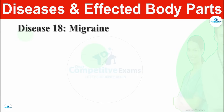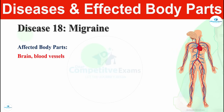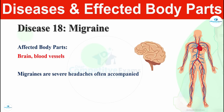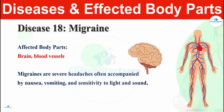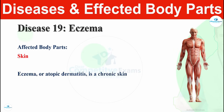Disease number eighteen is migraine. Migraines affect the brain and blood vessels. Migraines are severe headaches often accompanied by nausea, vomiting, and sensitivity to light and sound, and can last even for hours to days. Migraines affect the brain and blood vessels.